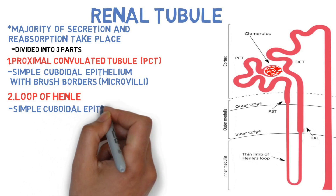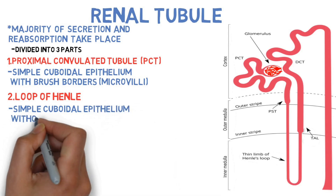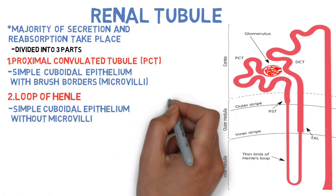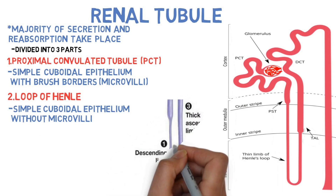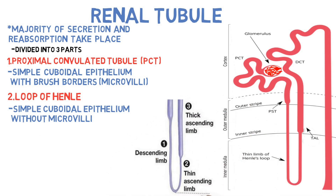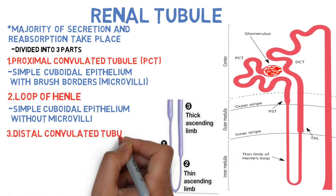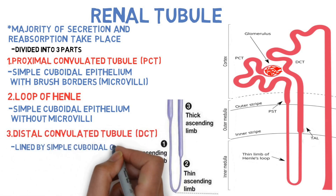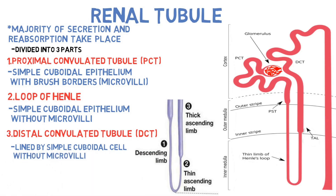The loop of Henle is lined by simple cuboidal epithelium without microvilli. It is divided into three parts: thin descending part, thin ascending part, and thick ascending part. The third part of the renal tubule is the distal convoluted tubule, which is lined by simple cuboidal epithelium without a brush border.